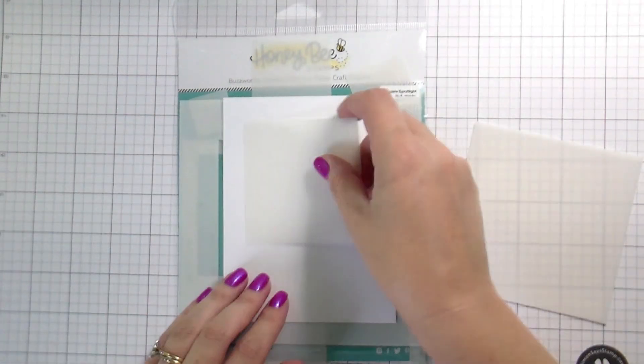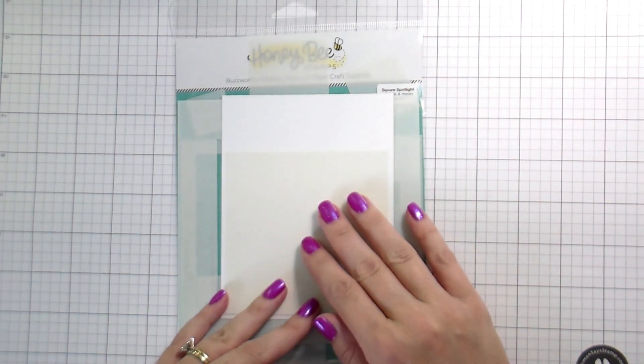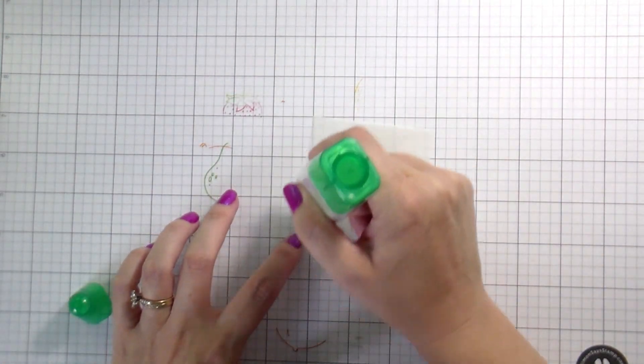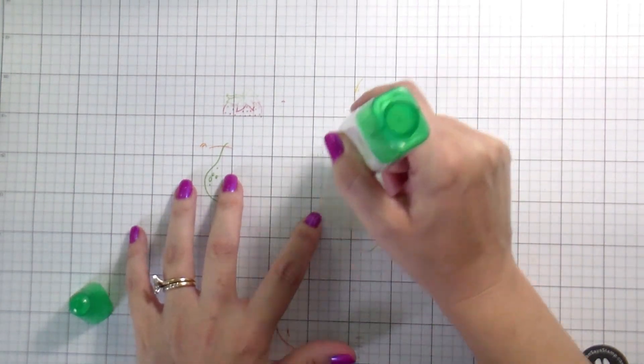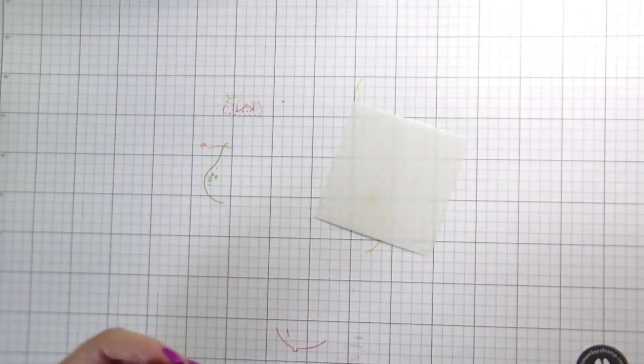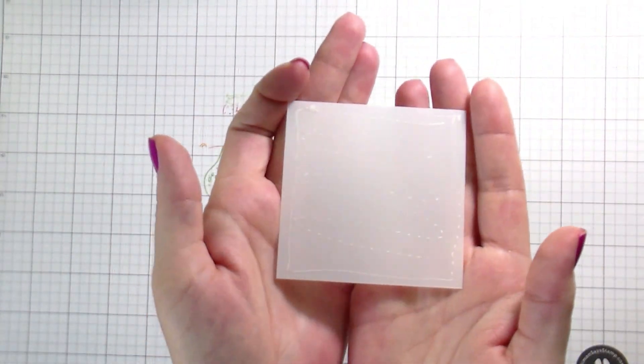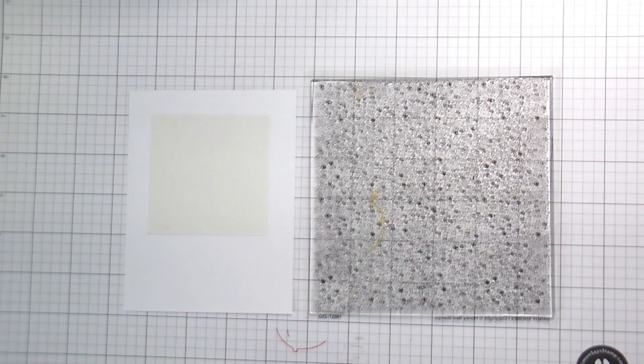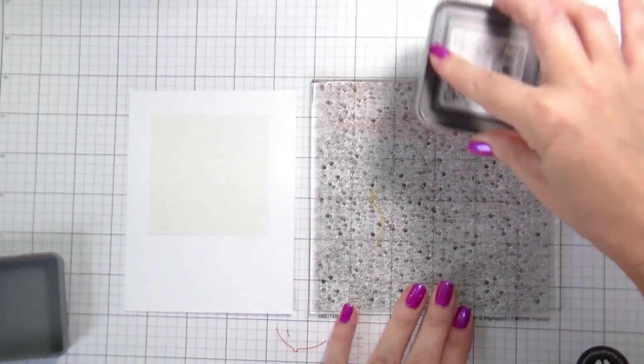So here, these are the square spotlight stencils. There's a lot of different shapes in the store. I chose the square just because I had a lot of roundness going on with the images I chose. But these are really good if you want to do some ink blending and block out a space, or if you want a nice even border.